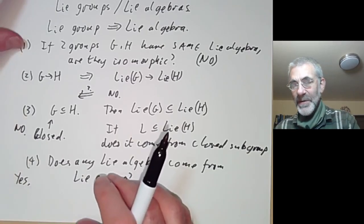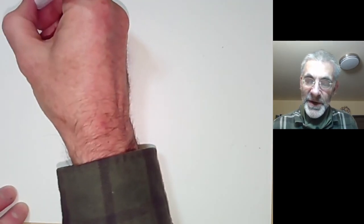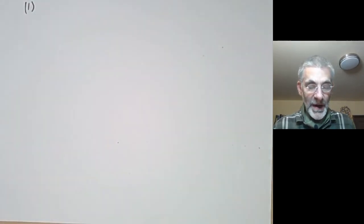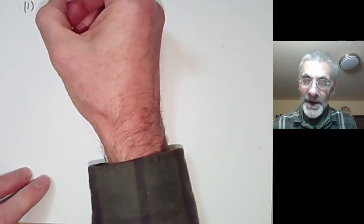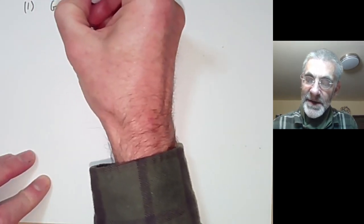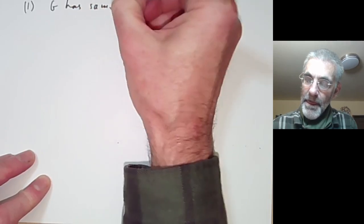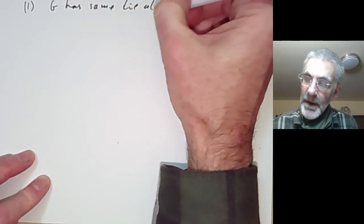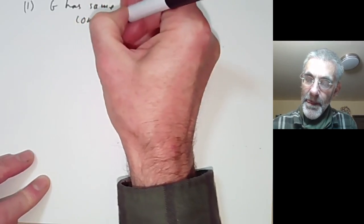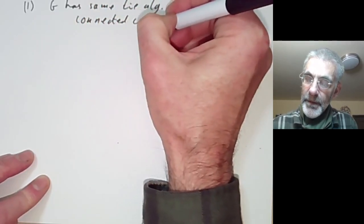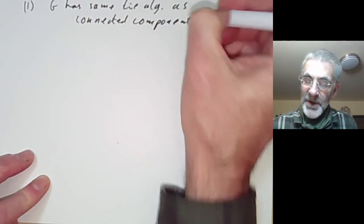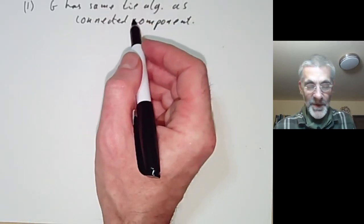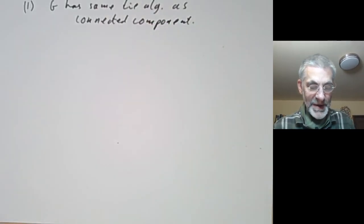We're going to go through and give some examples to illustrate what's going on. The first question said that if two Lie groups have the same Lie algebra, are they isomorphic? Well, this is obviously false because G has the same Lie algebra as its connected component. So in general, if a group isn't connected, there will be a connected group with the same Lie algebra and the groups aren't isomorphic.